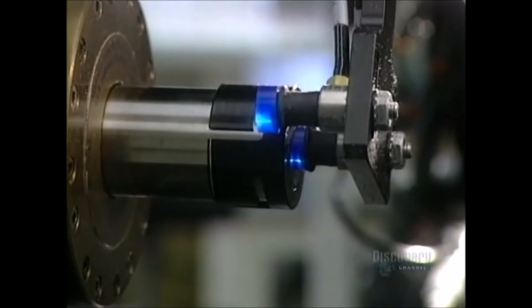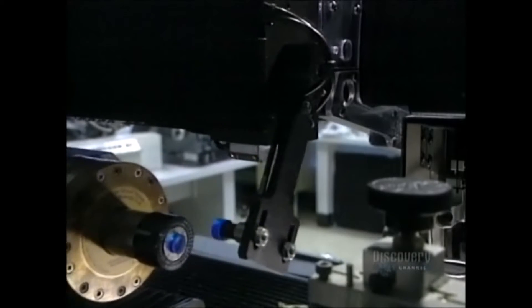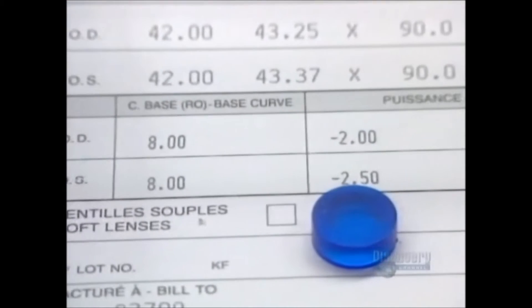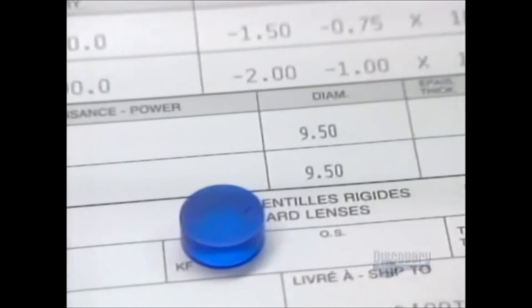These small polyhema discs are used to make soft polymer contact lenses in a variety of colors. We see here a patient's prescription, essential to the fabrication of lenses.